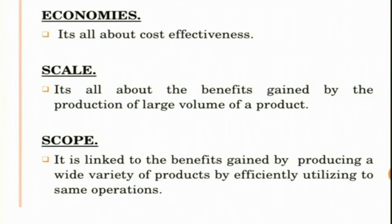Economies means it is all about cost effectiveness. Economies of scale means it is all about the benefits gained by the production of a large volume of a product. When you keep producing a large volume of product — mass production — then the per unit cost, that is the marginal cost of production, decreases at a faster rate.